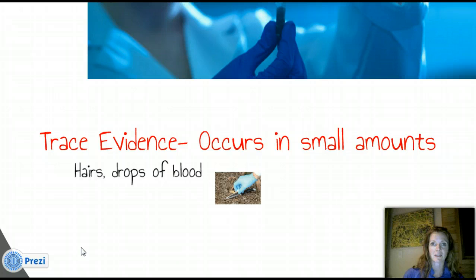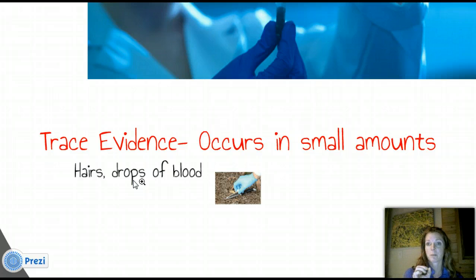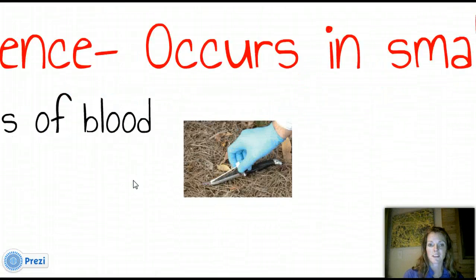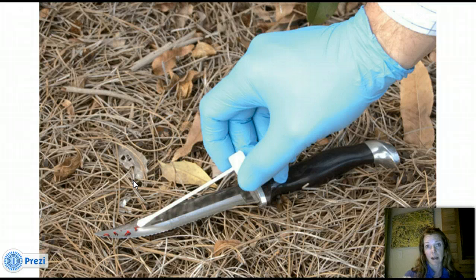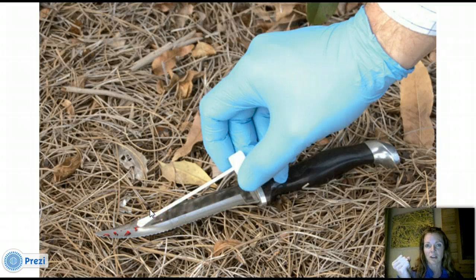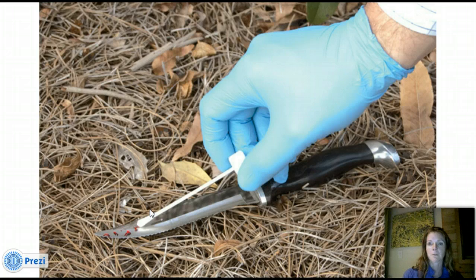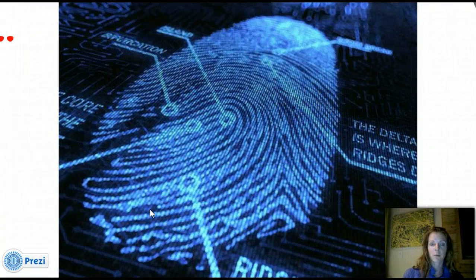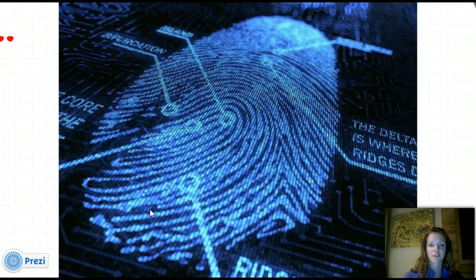One thing forensic scientists are always looking for is trace evidence. These are tangible things that occur in really small amounts — could be hairs, could be drops of blood — things that are almost microscopic. Looking closely at this picture, you can see blood drops. That's DNA — something you can pretty much instantly use to figure out who it belongs to, and why this person's blood is on this knife. Fingerprints are another huge form of evidence, because everyone has different fingerprints, and they're a key way to identify people.